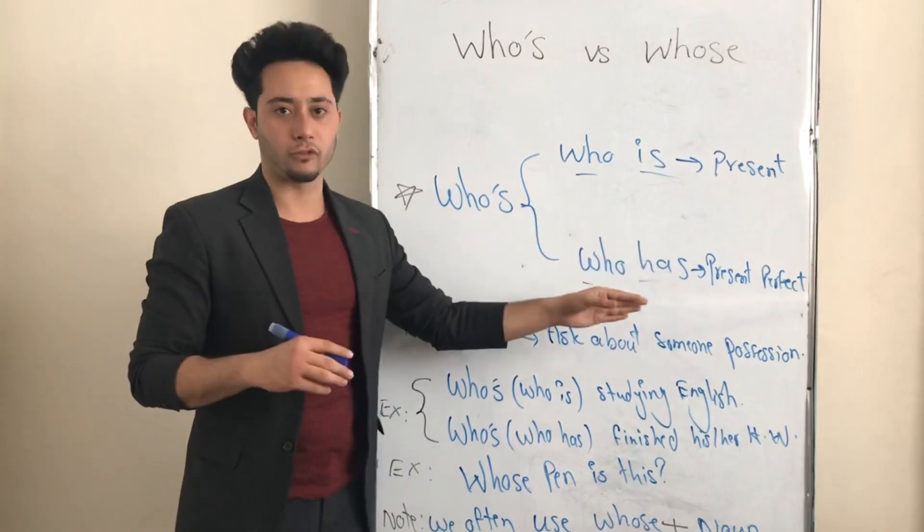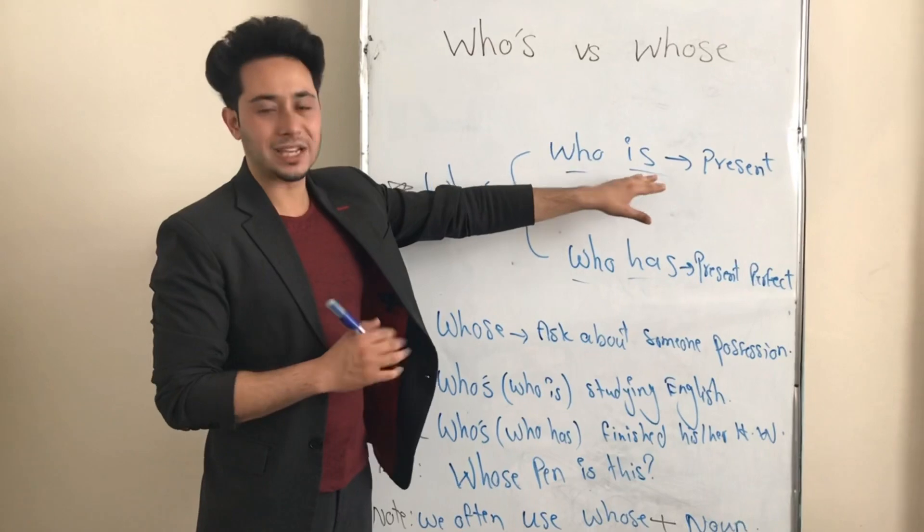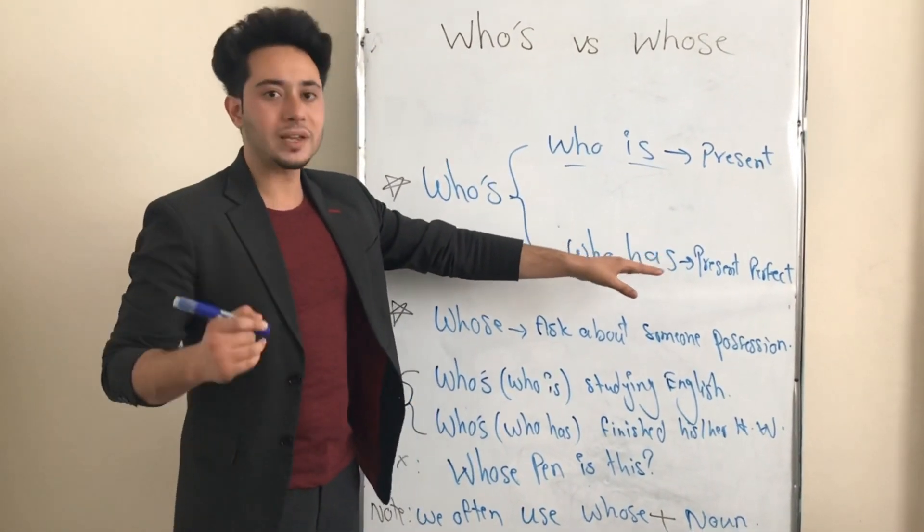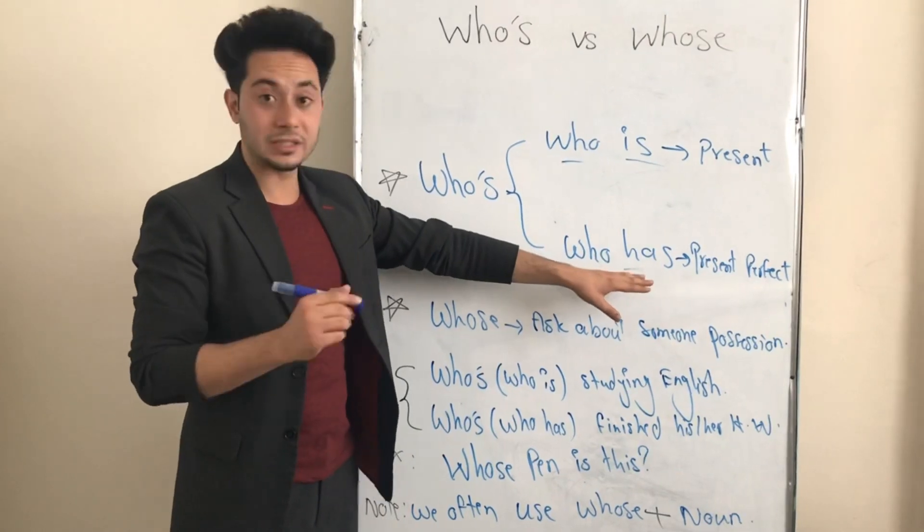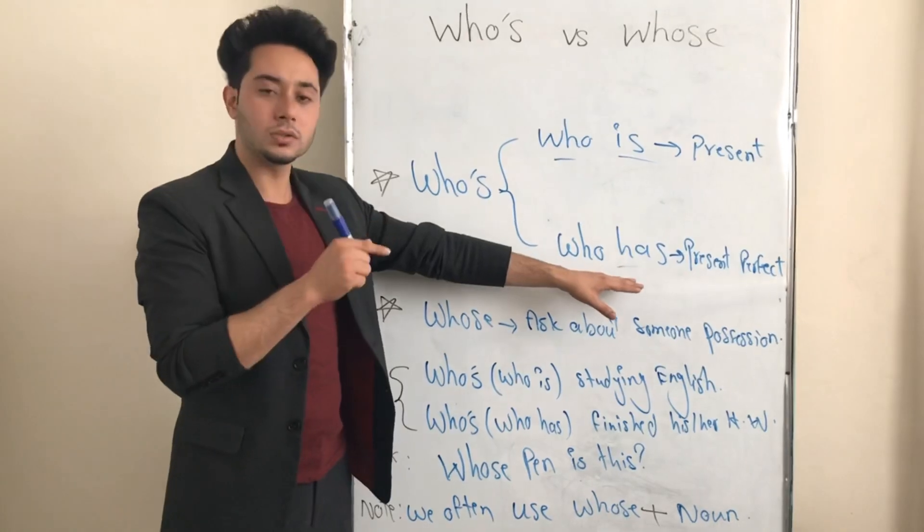Where can we use them? We can use who is in present tense. We can use who has in present perfect tense. Also, we can say that we can use it in perfect tense. Also, when we're using has as the main verb in our sentence, we can use it in simple present tense as well.